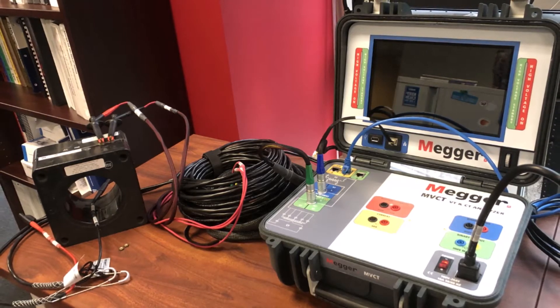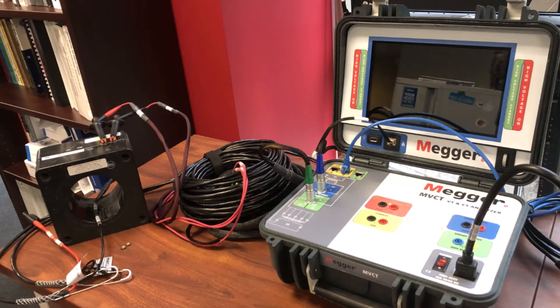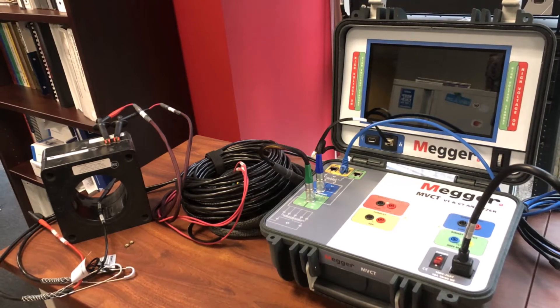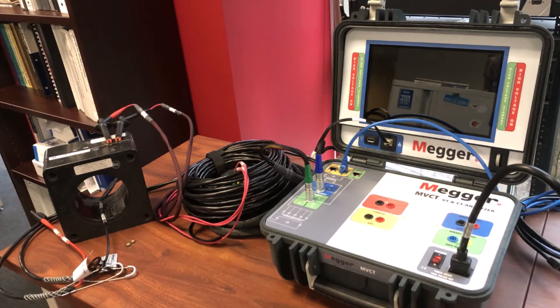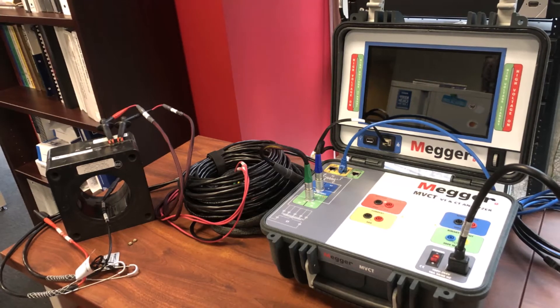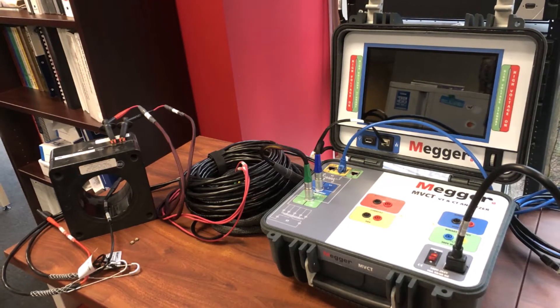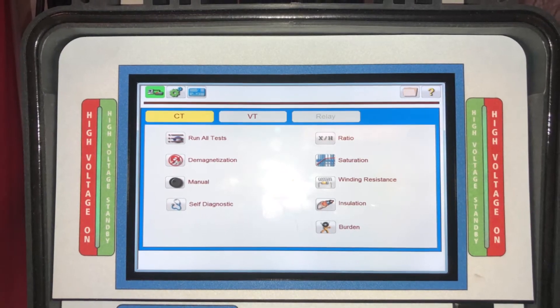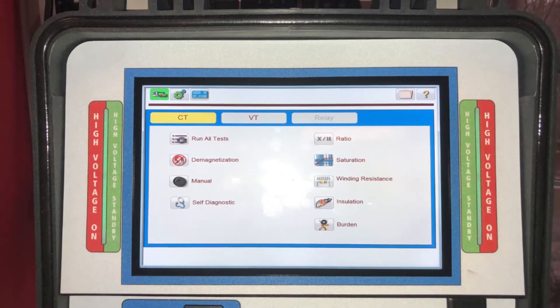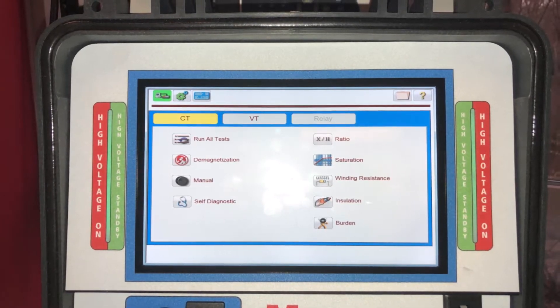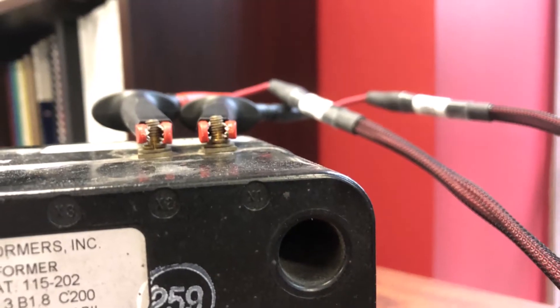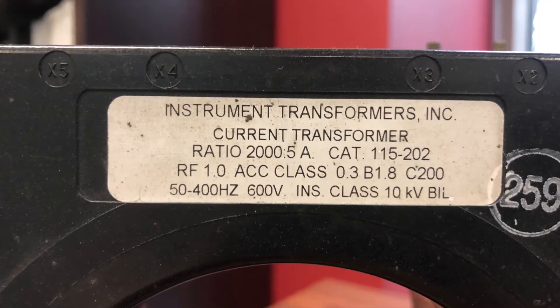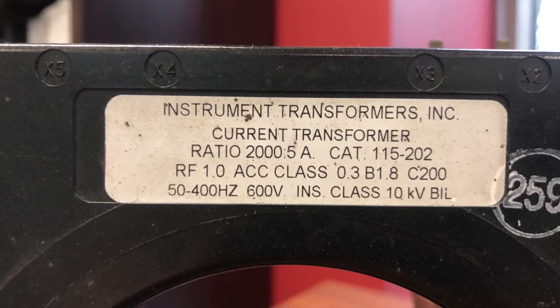Here is the connection setup of the MVCT testing set and current transformer. The set is connected to the Windows-based Mager PowerDB interface software via Ethernet. All testing is run from this interface for the purpose of this presentation, but the set can be ordered with a touchscreen HMI for ease of use, especially when out in the field applications. The CT under testing is a GE-ITE 2000 to 5 ratio, single tap NC accuracy class C200 600 volt insulation.